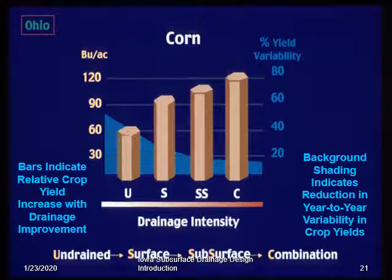Although this is an old slide, it illustrates two aspects of the agronomic benefits of improved drainage. The bars represent how more intense drainage — going from undrained to surface-only drainage, to subsurface-only drainage, and combined surface and subsurface drainage — results in higher average yields. From the undrained condition at about 60 bushels per acre corn, yields went up to 120 bushels per acre. The shaded graph represents the other facet: there is a reduced year-to-year variability in yields. Not only are the average yields increased, the yield variability from year to year is decreased.